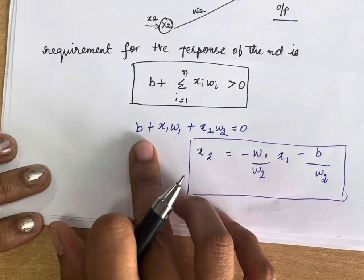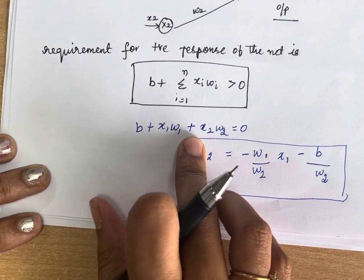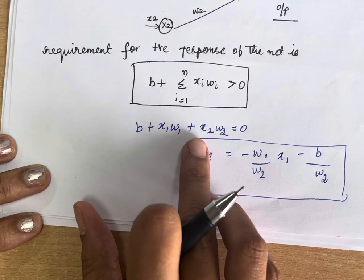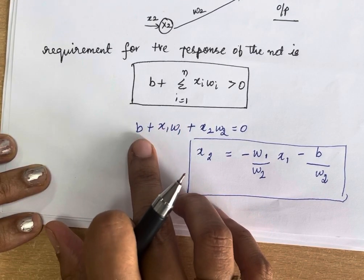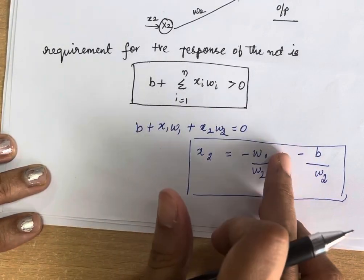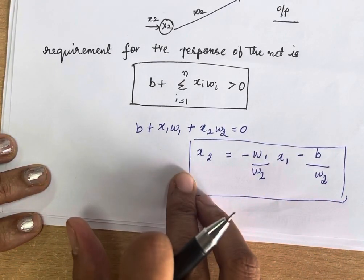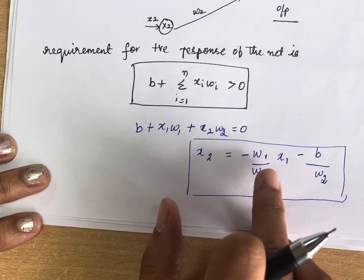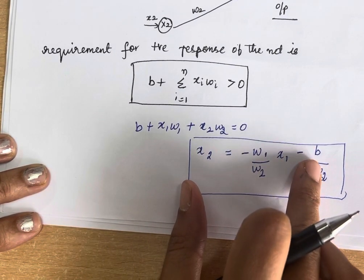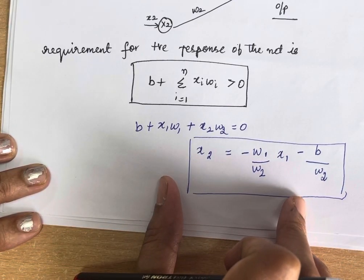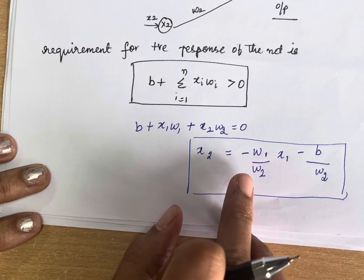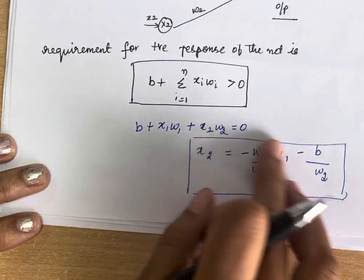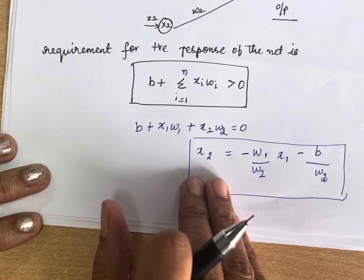When you equate it to zero: b + x1·w1 + x2·w2 = 0. You can find the value for x2 by moving b and x1·w1 to the other side. So the equation of the line you will get is: x2 = (−w1/w2)·x1 − b/w2. This is the equation of the line. After calculating w1, w2, and b, you substitute these values and you will get the line equation.